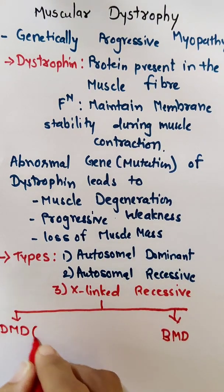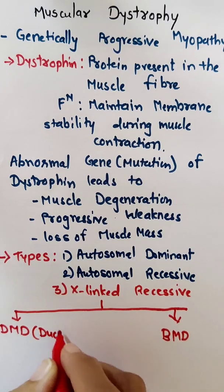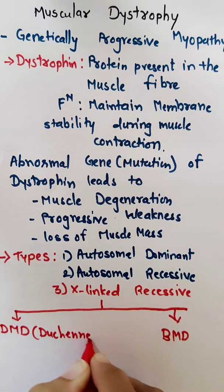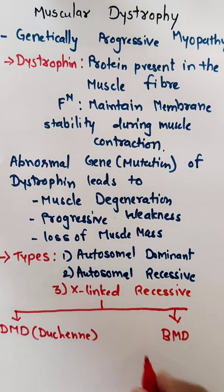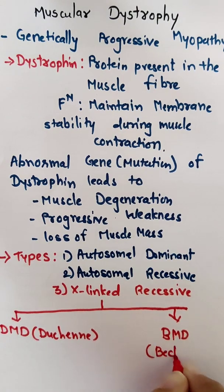DMD stands for Duchenne muscular dystrophy, and BMD stands for Becker muscular dystrophy.